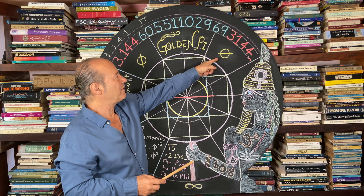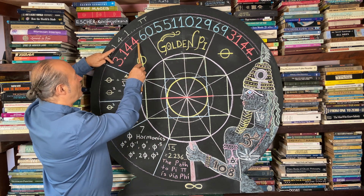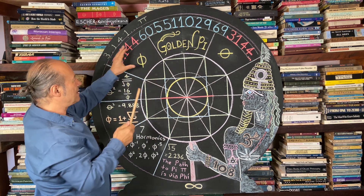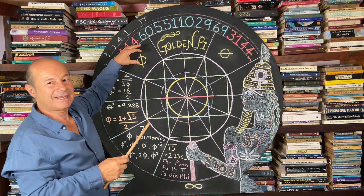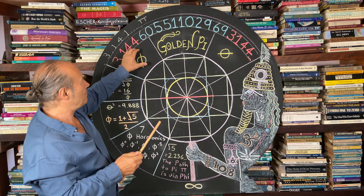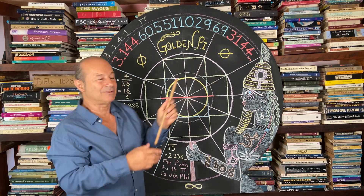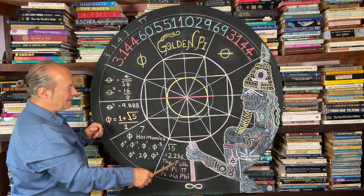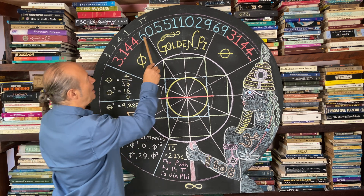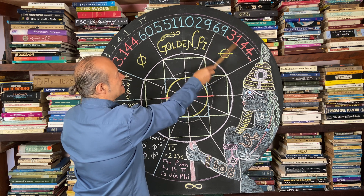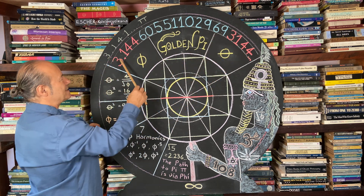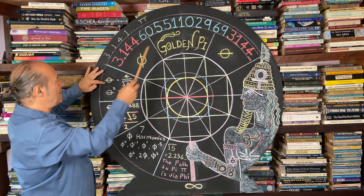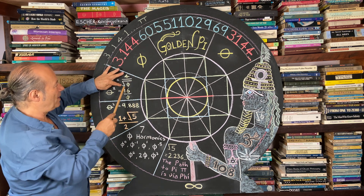The new word for this new frequency is 3.144, and we need a new symbol for it. Because of the phi-pi relationship, I propose we take the symbol for phi, the Greek letter phi, and turn it 90 degrees — ending up with something like the astrological Saturn symbol. This is the new frequency, a correctional code. Notice that the decimals of 3.144 are a repeat of the first four decimals — there's symmetry and harmony. The formula to get 3.144 is based on 4 divided by the golden root.